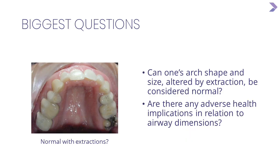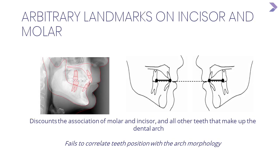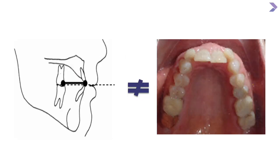When a patient presents with a very narrow arch, what are the health implications? The current method of diagnosis in orthodontics is essentially flat — we need to put patients into multi-dimensional layers. The problem is we are choosing only the molar and incisor, ignoring all the possible landmark points in between. And whatever we decide about the angulation of the incisor and molar position doesn't actually translate directly into arch morphology.